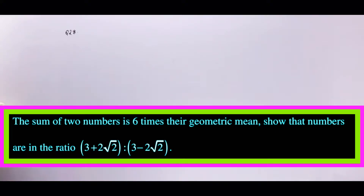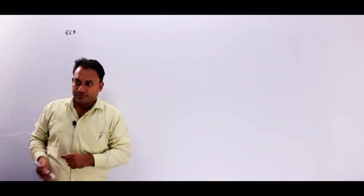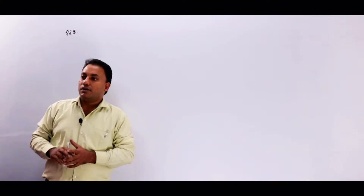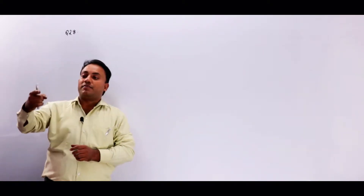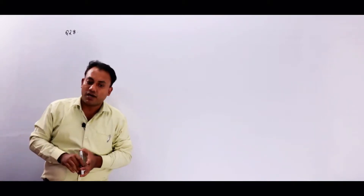Question number 28. The sum of two numbers is 6 times their geometric mean. Show that the numbers are in ratio (3 + 2√2) : (3 - 2√2). बच्चों, कहा गया है कि दो numbers का sum उनके geometric mean के 6 times हैं, तो उनका ratio आपको solve करना है जो question में दिया हुआ है।